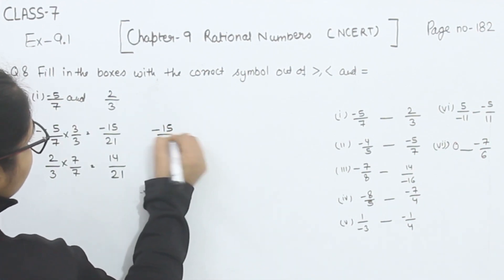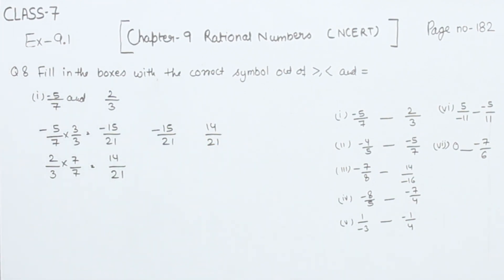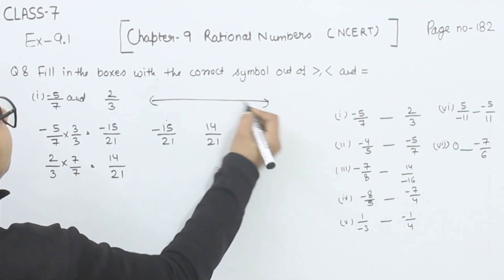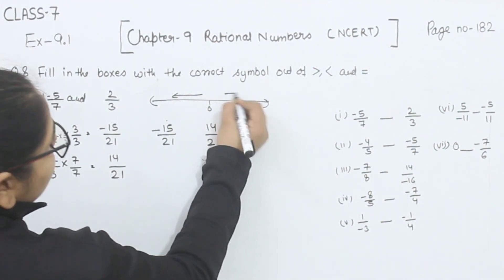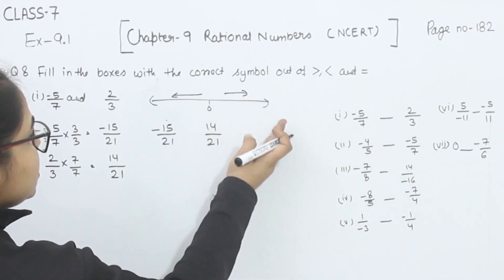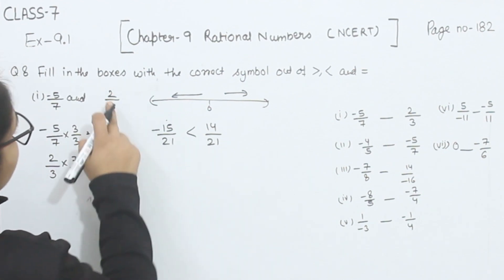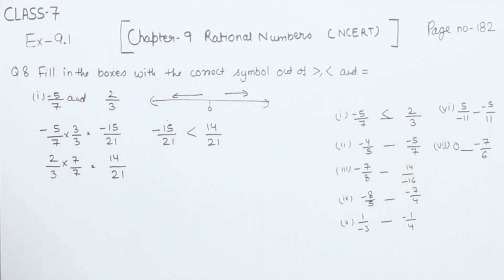Now this is minus 15 by 21 and this is 14 by 21. The denominators are the same. We can compare them — negative numbers are smaller than positive numbers. Minus 15 by 21 is less than 0, represented on the left-hand side of 0 on the number line. 14 by 21 is greater than 0, on the right-hand side. So 14 by 21, which represents 2 by 3, is greater than minus 5 by 7.